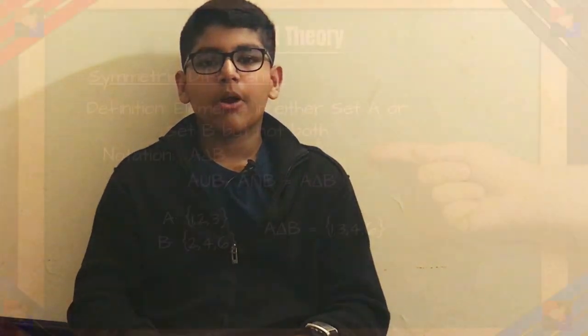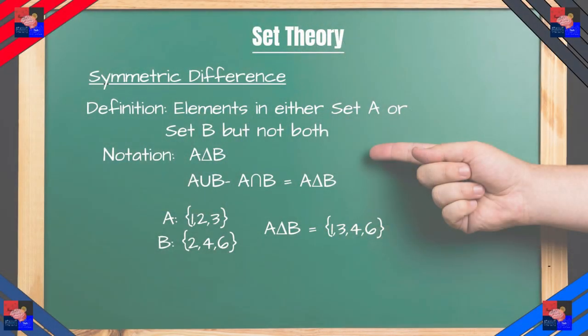So we've gone over the basics. Now let's go over some of the more interesting parts. There is the symmetric difference, which is expressed as this triangular shape, which is actually capital delta. So what is the symmetric difference? The symmetric difference is a fancy way of saying that the element is in either set A or set B, but not both. So it's basically the union minus the intersection. So looking over our previous ones, A symmetric difference B equals one, three, four, and six. We skimmed over the two because the two is in both sets.